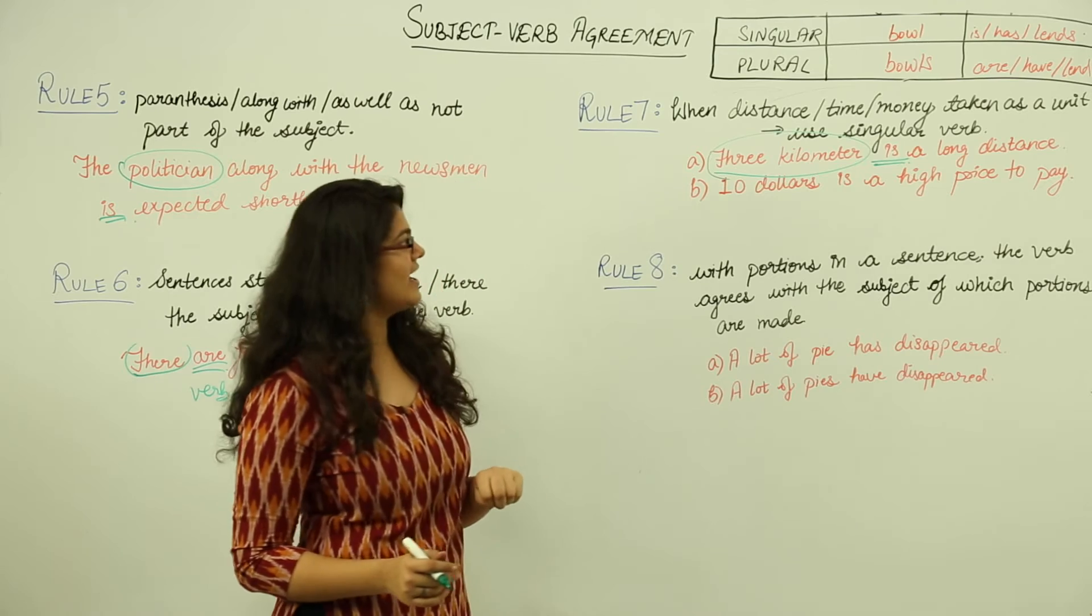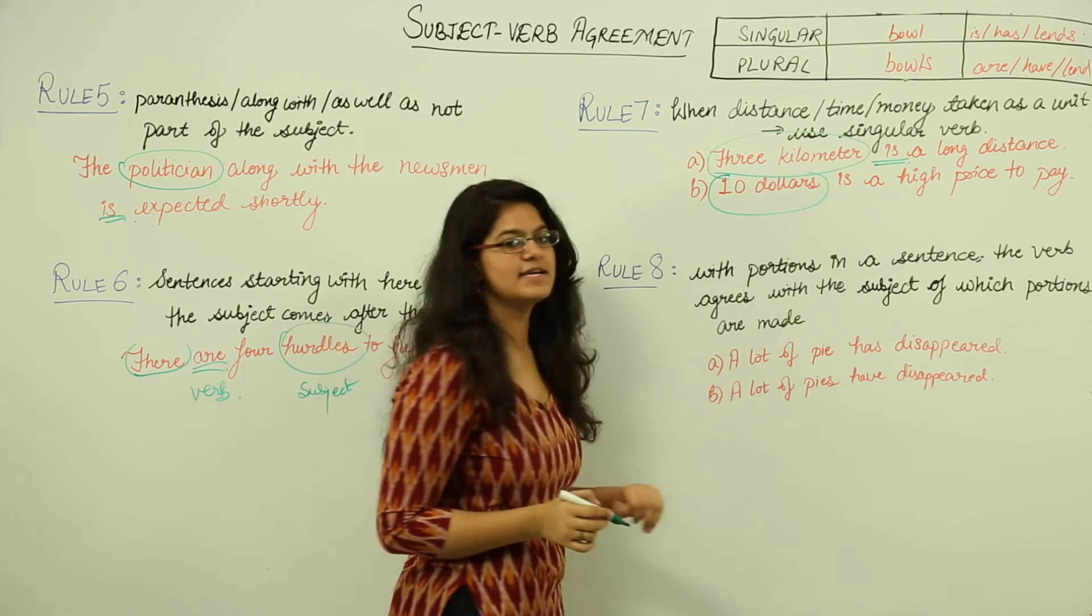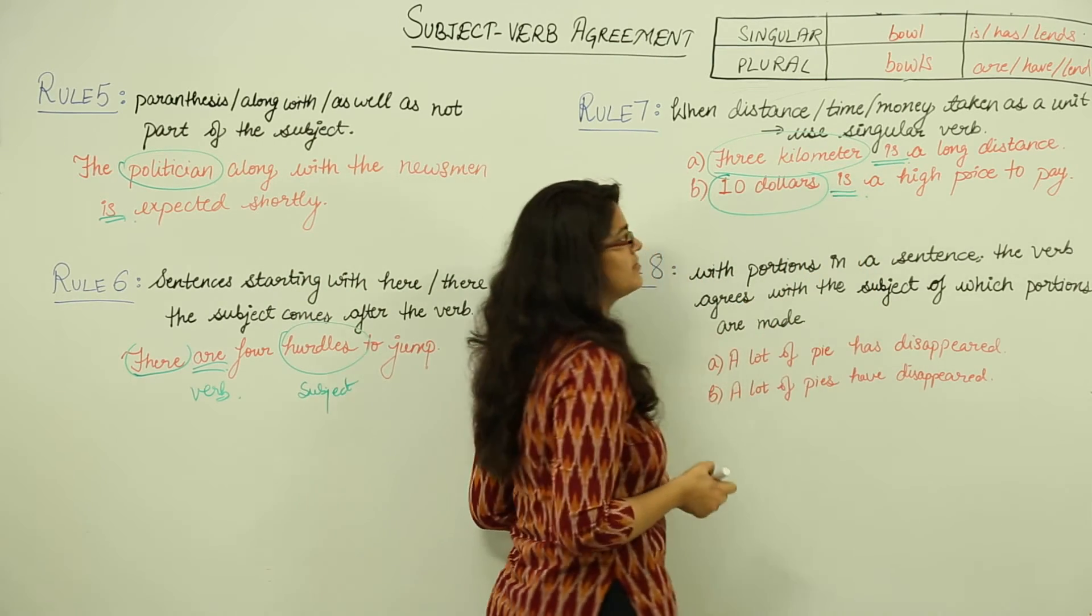Next, ten dollars is a high price to pay. Again, ten dollars as a sum of money is taken as a unit and 'is' is being used as a singular verb here.